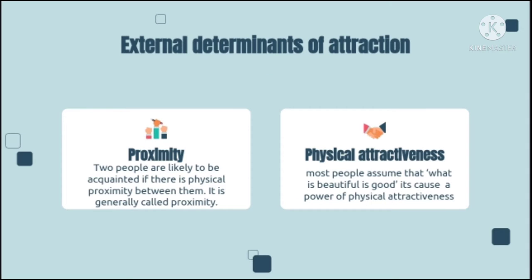External Determinants of Attraction. First: Proximity. It is generally said that close proximity fosters liking. Two people are likely to become acquainted if there is physical proximity between them — whether it is classroom seats, hostel rooms, residential flats, or office desks. Proximity is a very important factor in attraction. However, with the advent of the internet and social media, this may not stand to be very true, but it is still a very important factor in attraction.